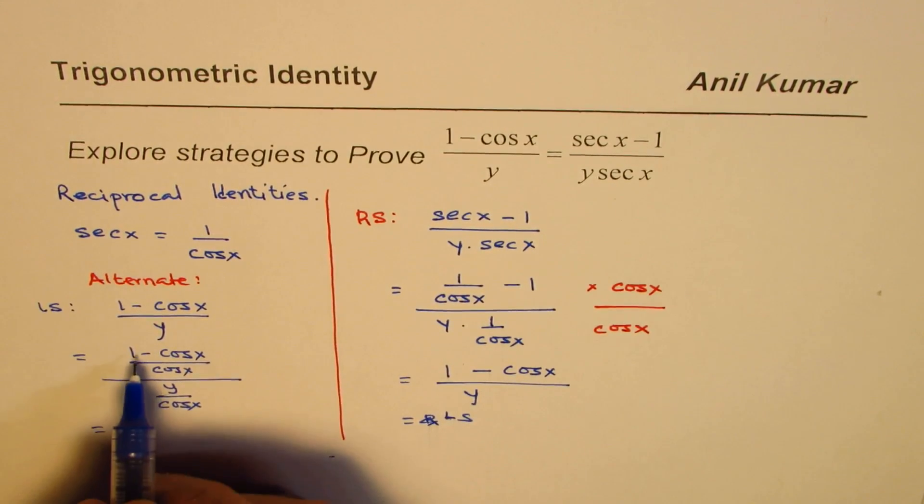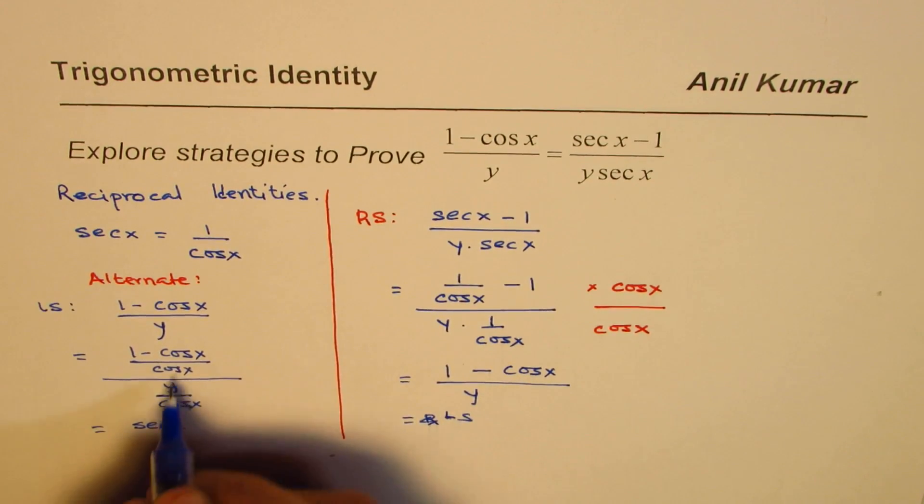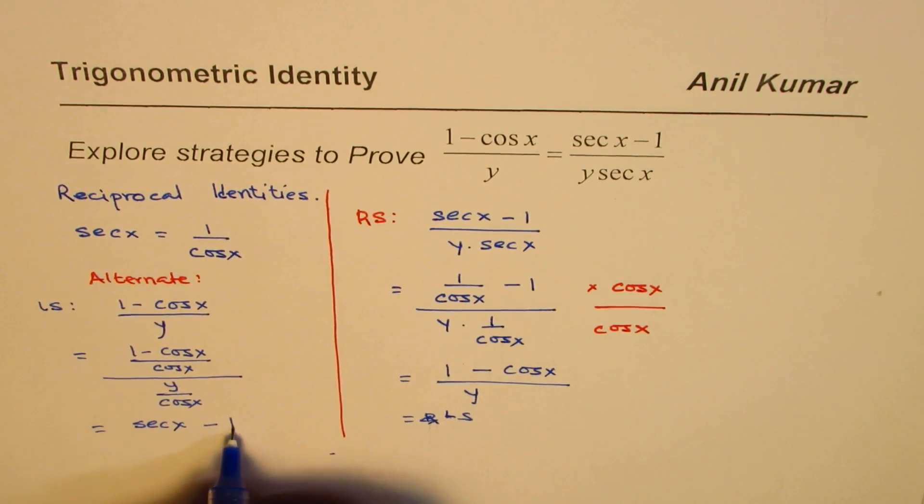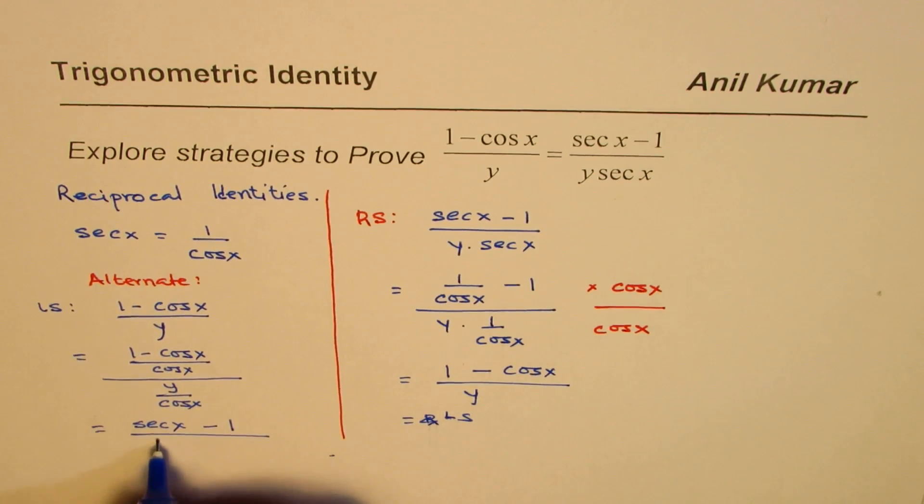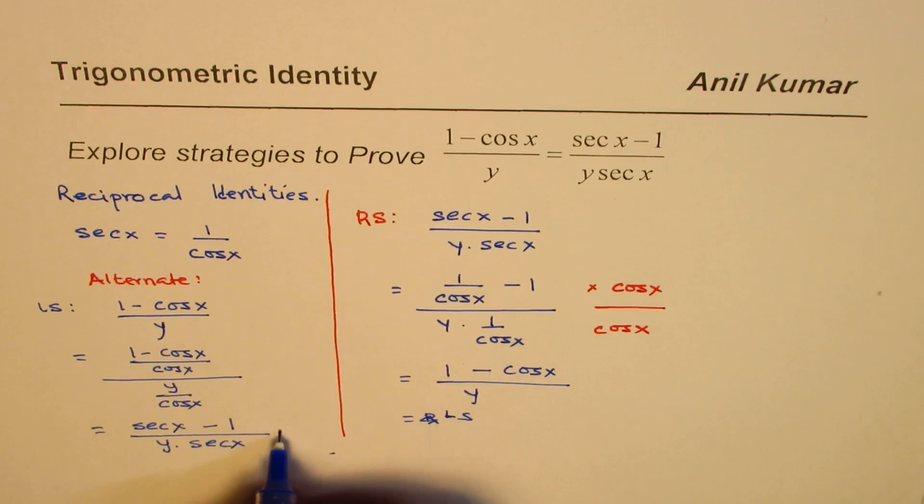Divided by y times 1/cos x, which is sec x, and that equals the right side. So you could do it in this fashion also. It works. Basically, we are applying the reciprocal identity in this particular example.